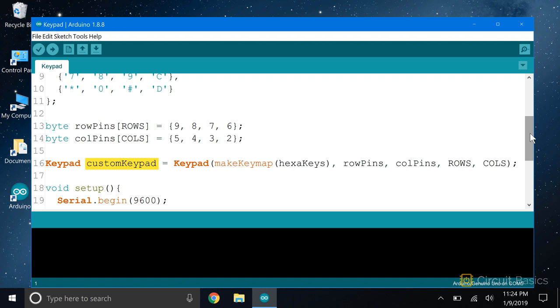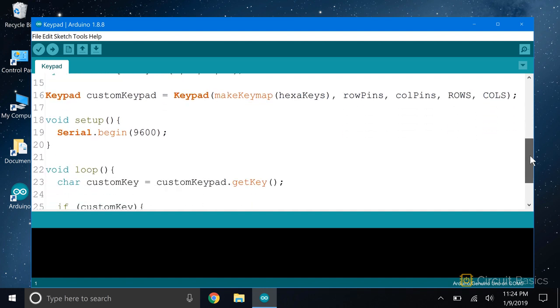Now we create an object of the keypad class called custom keypad. These are all initialization parameters. You can learn more about these on the library's web page. In the setup function we initialize the serial monitor.